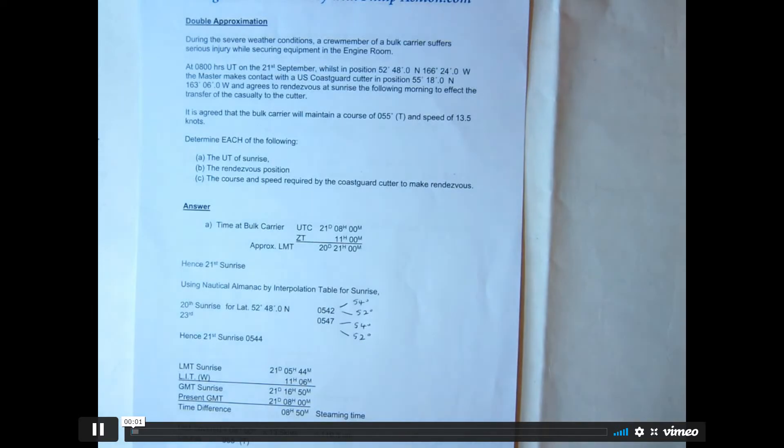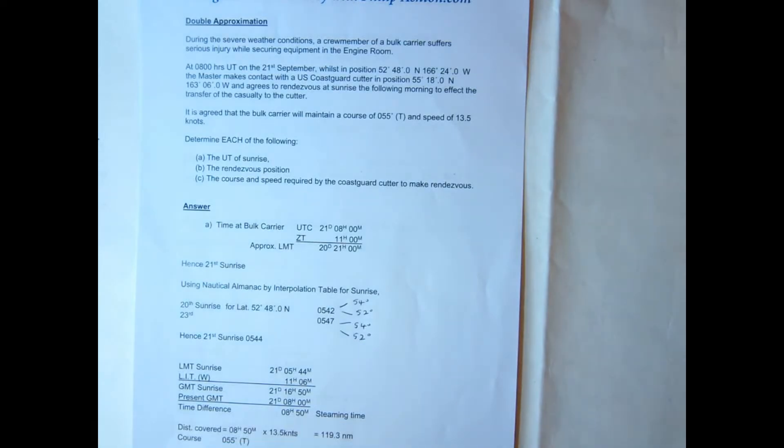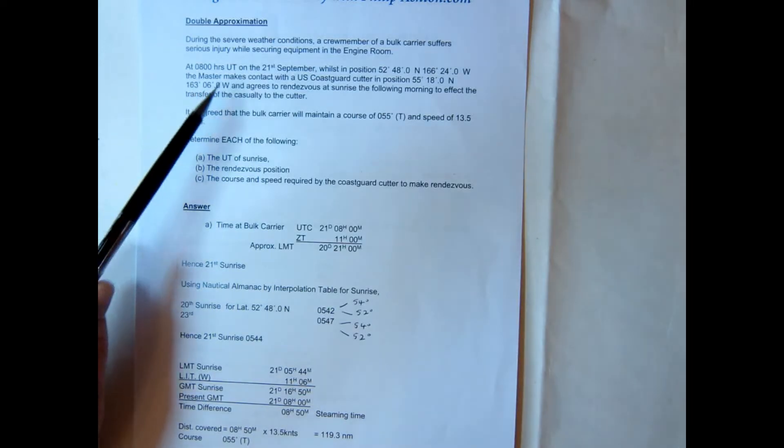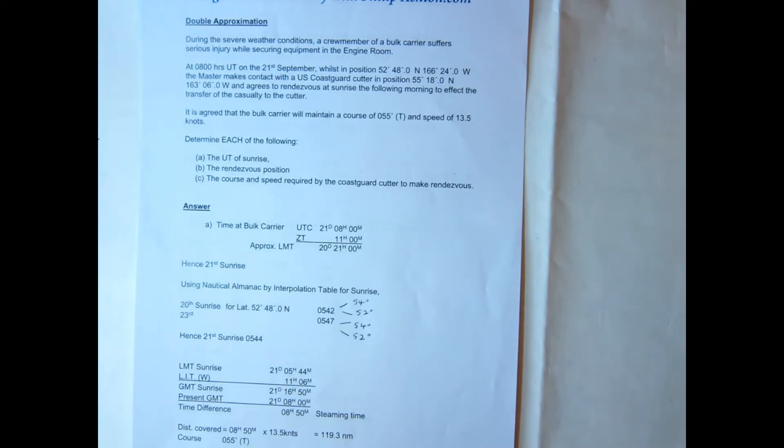The problem I want to look at now is what we call a double approximation problem where we have a casualty and we have to rendezvous. In this instance we have to rendezvous at a sunrise time and we're given the universal time 0800 on the 21st of September and the position that we're in.